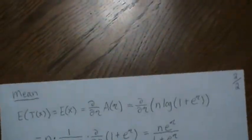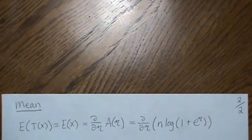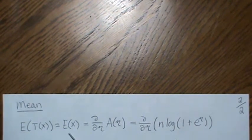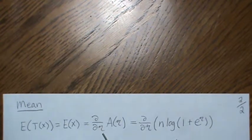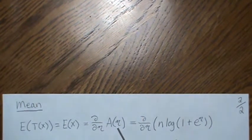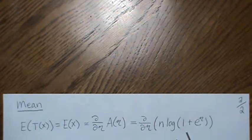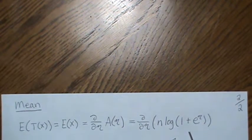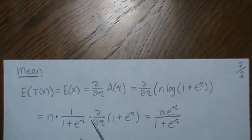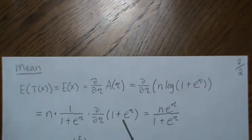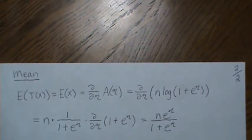So here to find the mean of our sufficient statistic, which was x, so it's E(x), you take the derivative of the log partition with respect to η. And we said that was n log(1 + e^η). Whenever there's a log you have to take the 1 over, and then you take the derivative of whatever's in here and you come up with this.